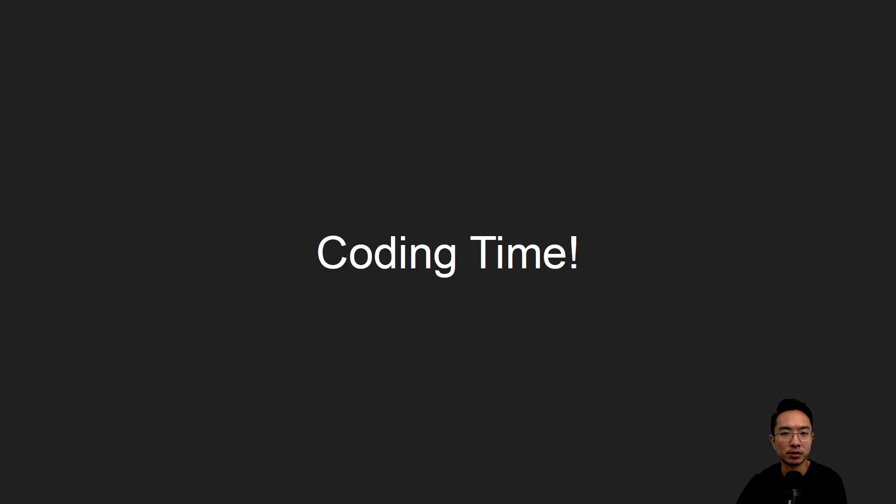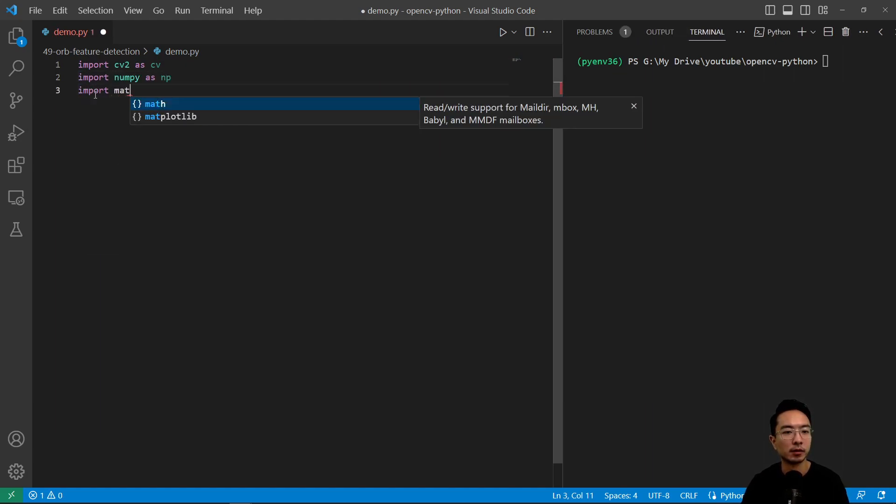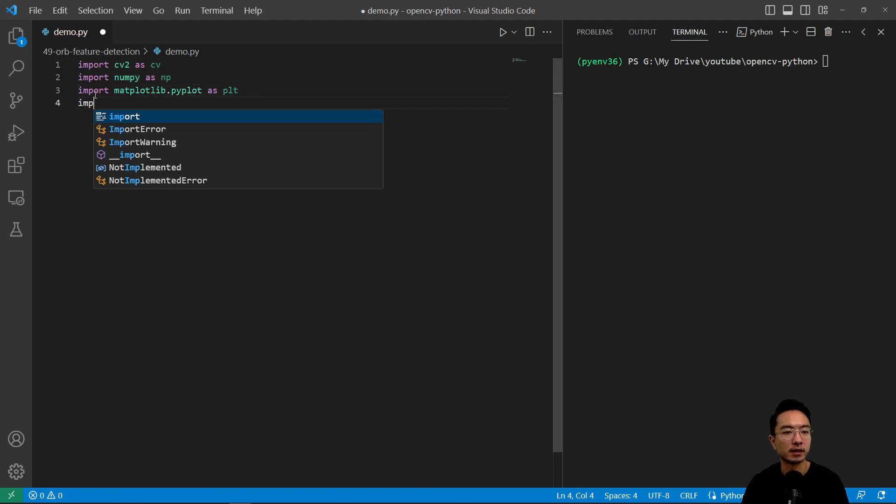So let's jump right into a coding example. Okay, so here we're going to import our modules that we'll need. We have import cv2 as cv, and then import numpy as np, import matplotlib.pyplot as plt, and then import os.